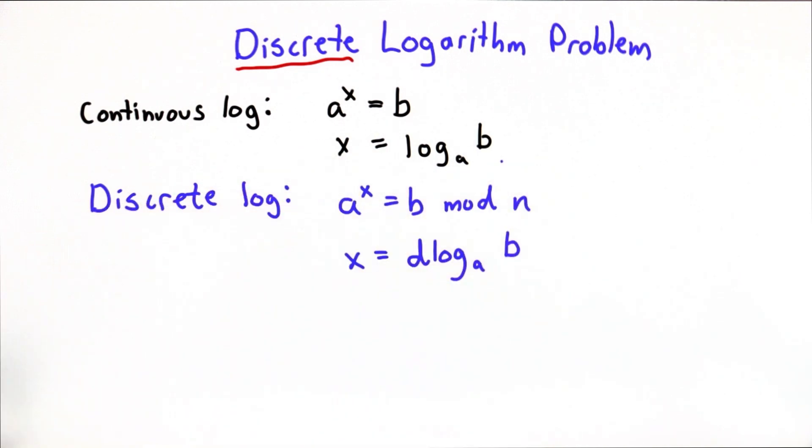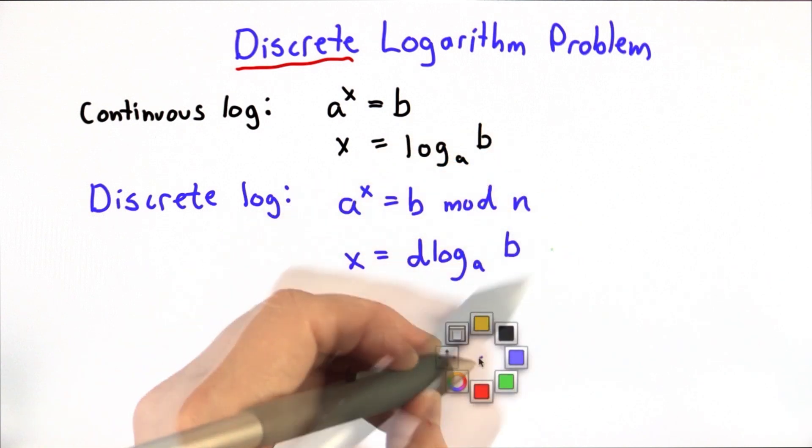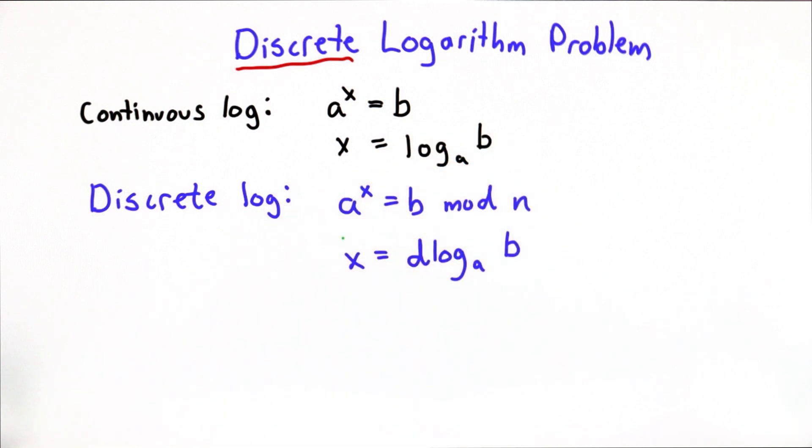And this turns out to be, as far as everyone can tell, a very hard problem when n is a large prime number. It's not clear that the discrete log always exists, and for certain choices of a, b, and n, it would not exist.